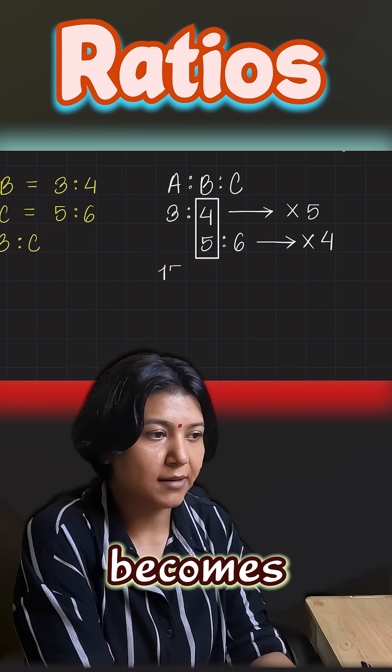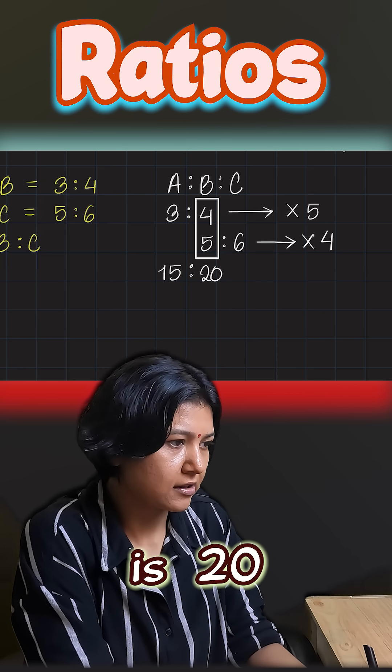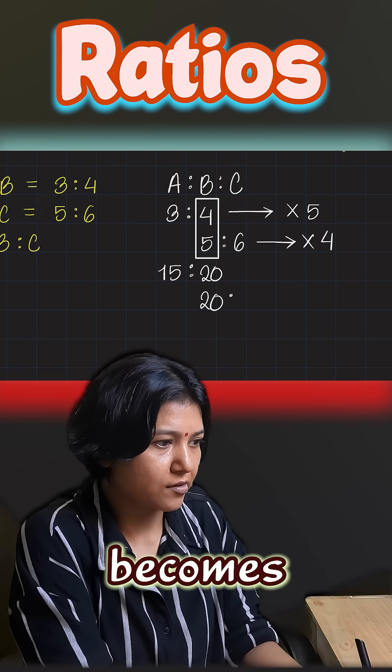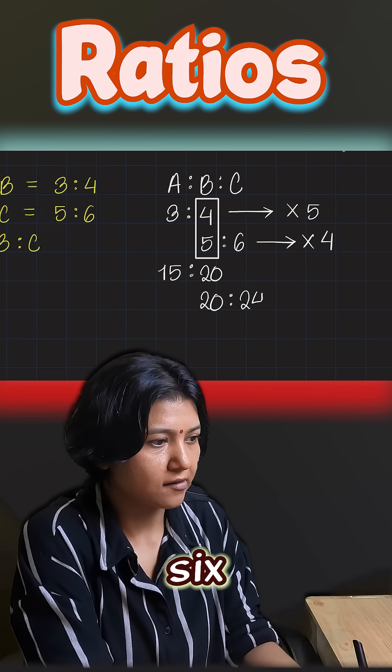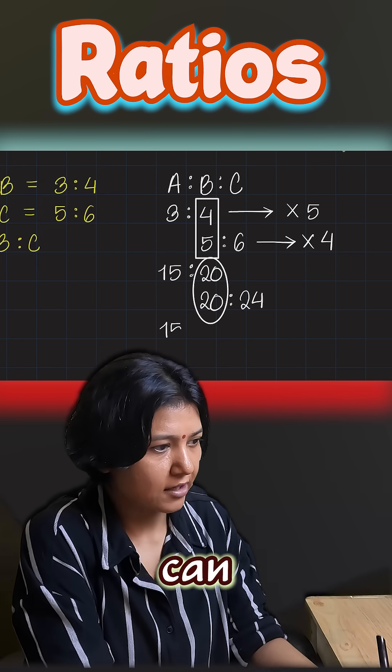Five into three is fifteen, five fours are twenty. The bottom one becomes twenty - five into four, six into four is twenty-four. Because your b values are same, you can compare all three of them together on a single line.